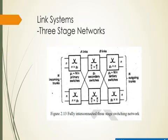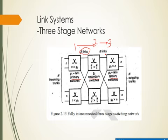Moving further, let us briefly introduce three-stage networks. A three-stage network has three switch types: primary, secondary, and tertiary switches. Between primary and secondary there are 'a' links, and between secondary and tertiary there are 'b' links. We will discuss this in detail in the next class. Thank you.